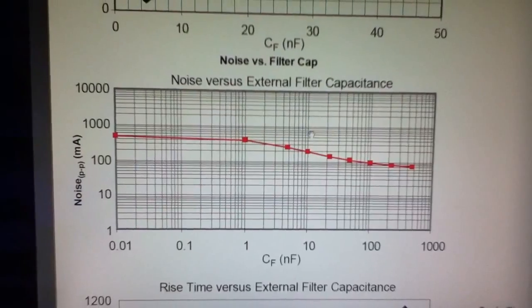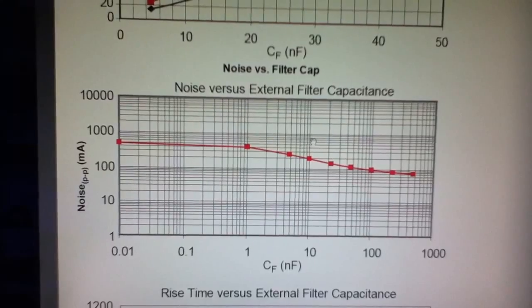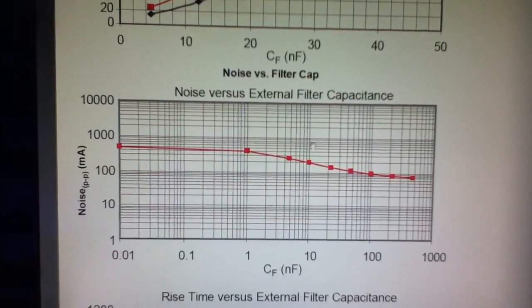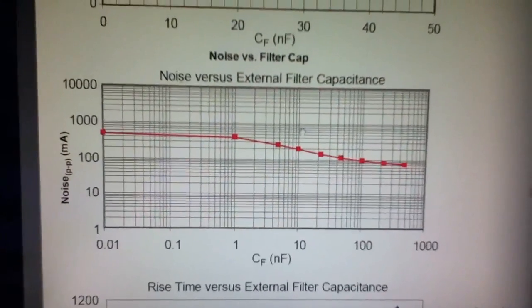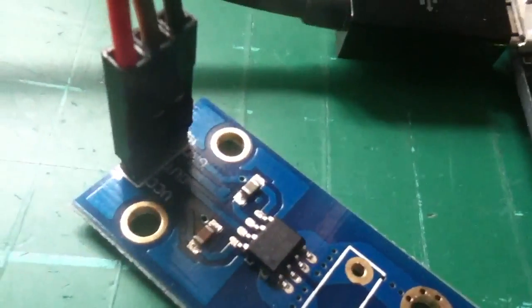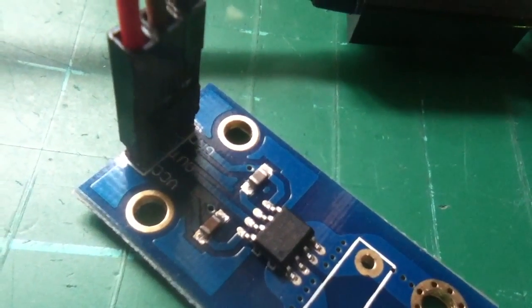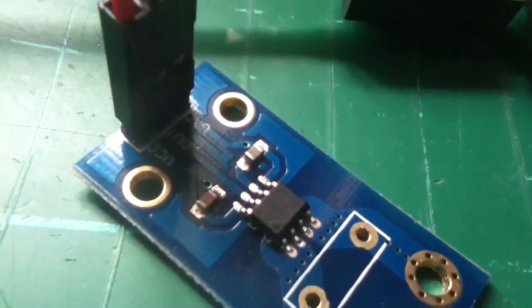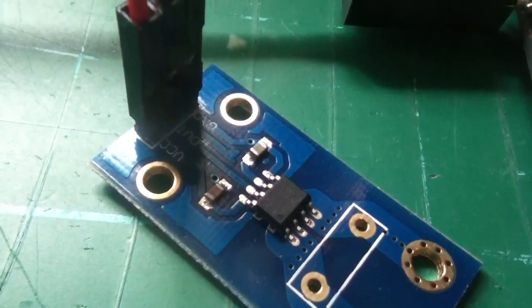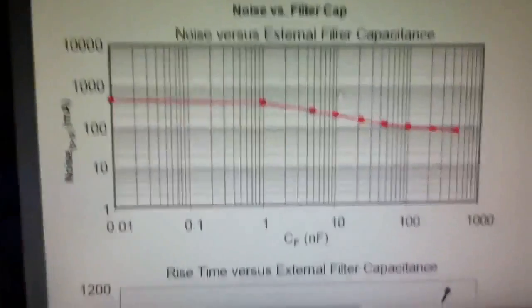On the data sheet there's this graph. It plots the noise figure in milliamps up the left-hand side against the capacitor filter. The capacitor filter is a little capacitor that's attached to pin six of the chip. If you look at the module, it's one of those two capacitors. One is just a decoupling capacitor on VCC, the other one is the filter capacitor - I think it's the one on the right. On this module it happens to be a 10 nanofarad, but on other modules I've got there's a 1 nanofarad.